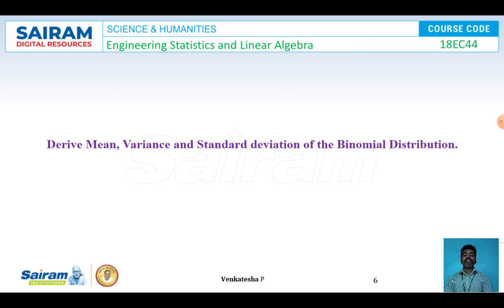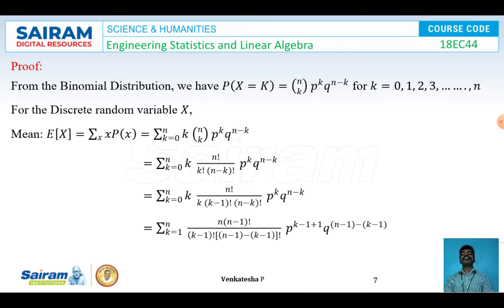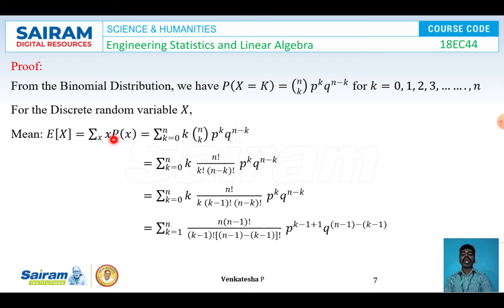Now we will derive the mean, variance, and standard deviation of the binomial distribution. Since binomial distribution is a discrete random variable, I use discrete formulas. Taking the binomial distribution P(X = k) = nCk · p^k · q^(n−k) for k = 0, 1, 2, ..., n, the expectation formula for a discrete random variable is E[X] = Σ x · P(X = x). Replacing P(x) with the binomial formula and using x = k, I get E[X] = Σ(k=0 to n) k · nCk · p^k · q^(n−k).